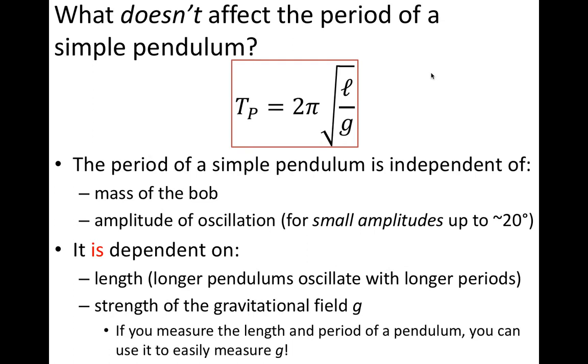So a pendulum of the same length would have a different period on Earth than it would on the Moon. And as discussed before, if you know the length and the period of the pendulum, then you can use it to measure g at any given location.